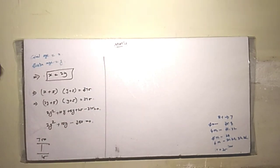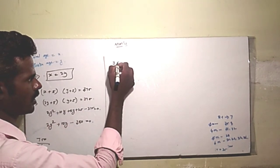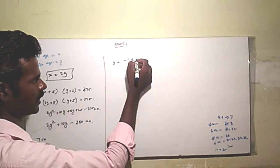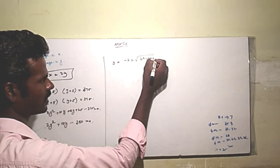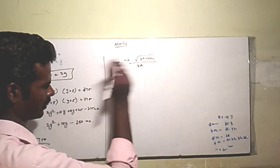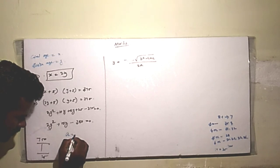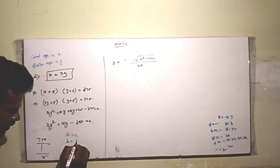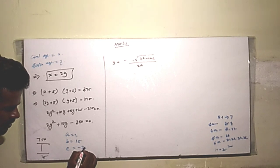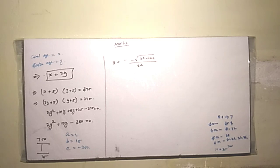So we'll use the formula y equals minus b plus or minus square root of b squared minus 4ac divided by 2a. So we'll use the formula now. Here a equals 2, b equals 15, and c equals minus 350.